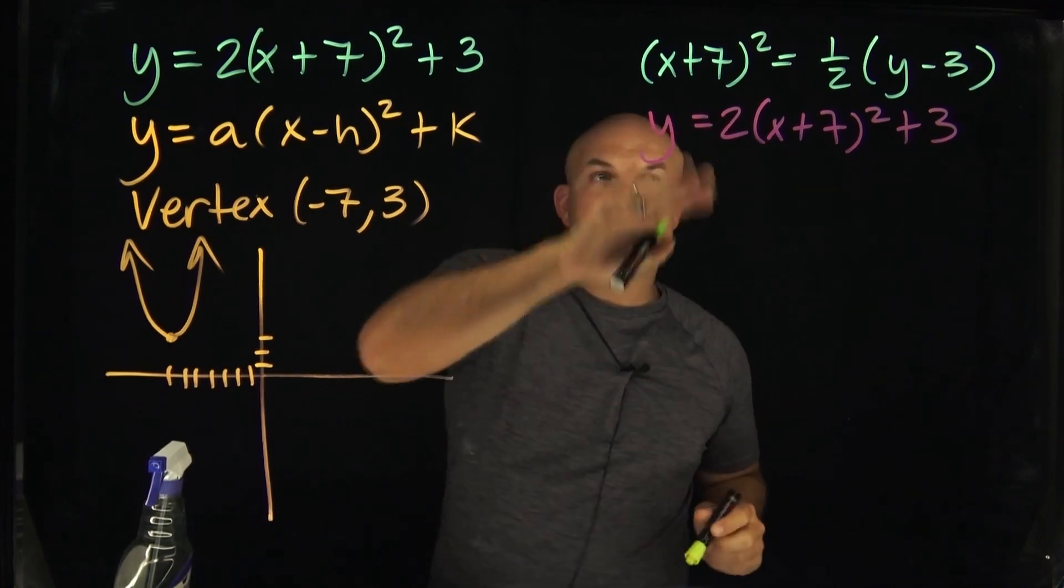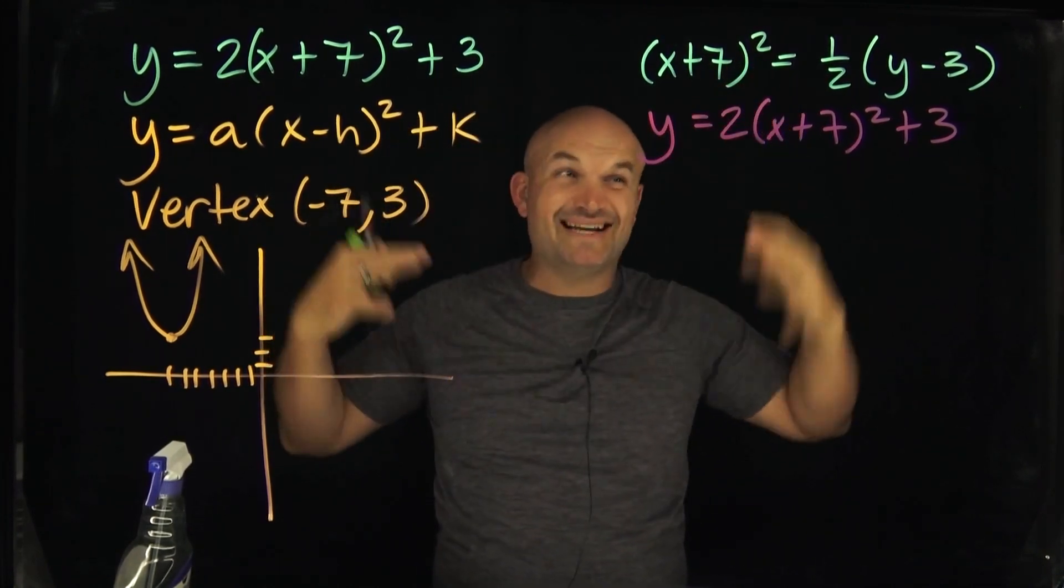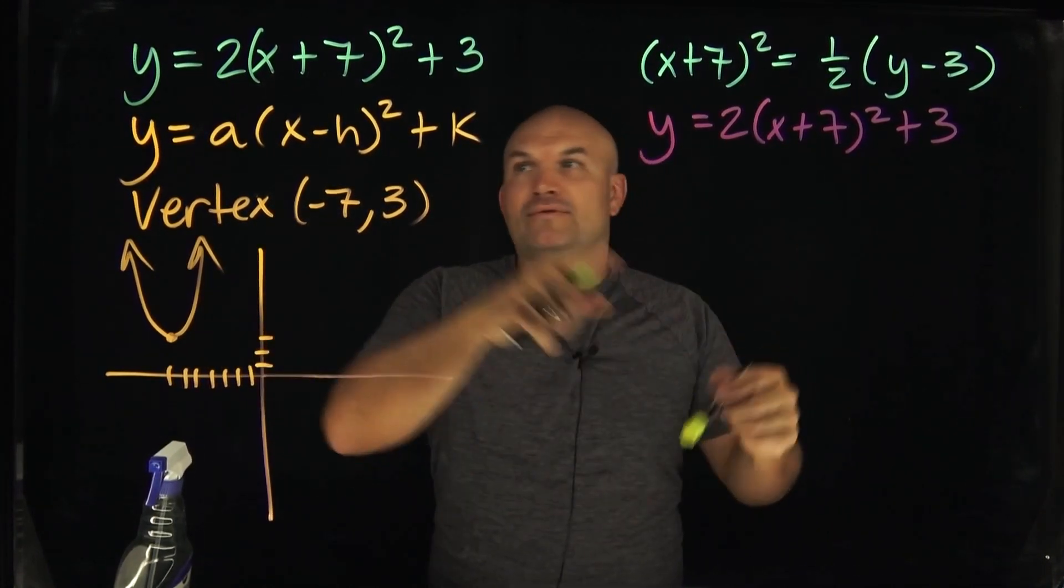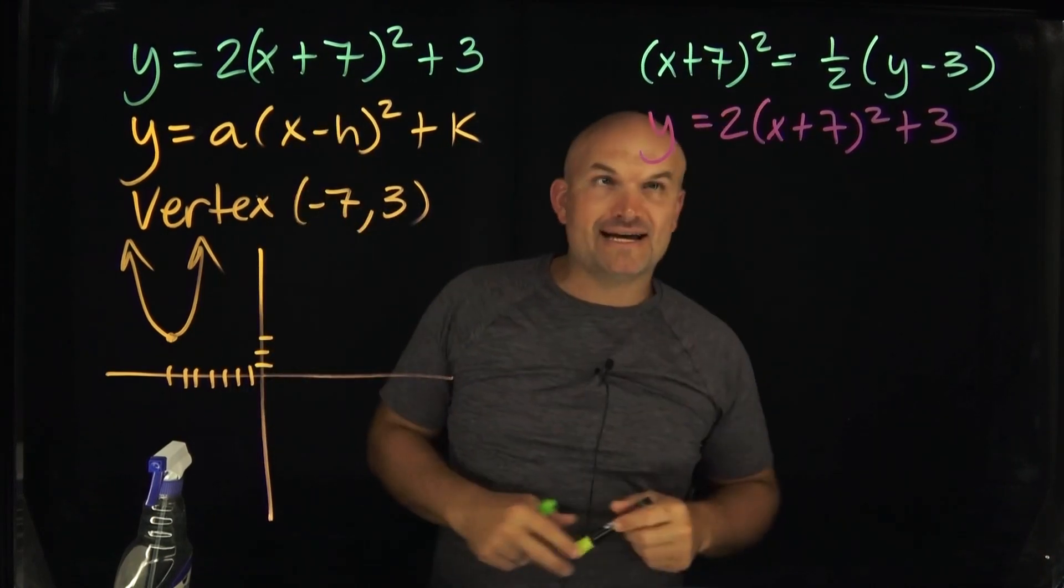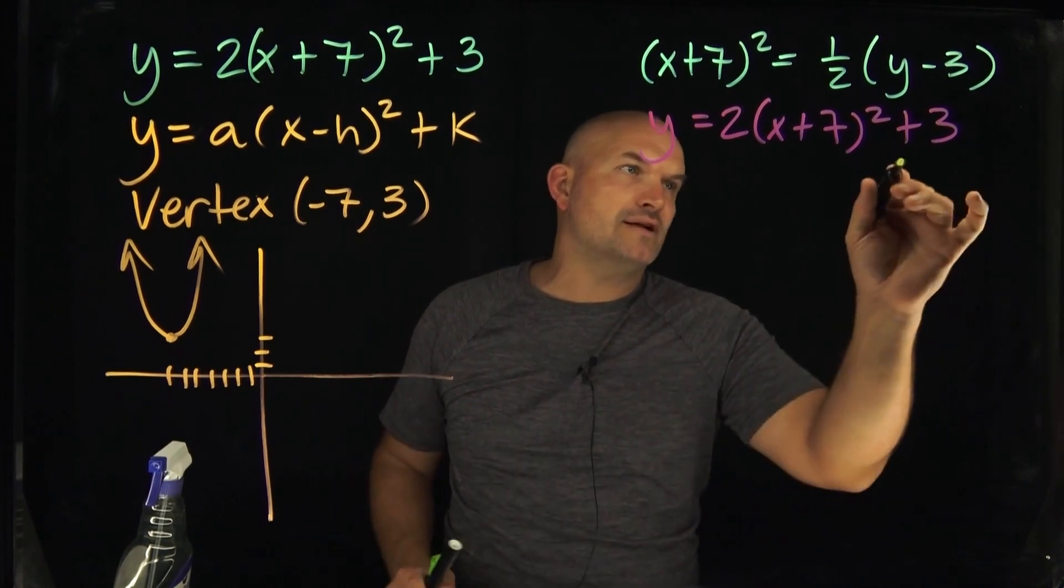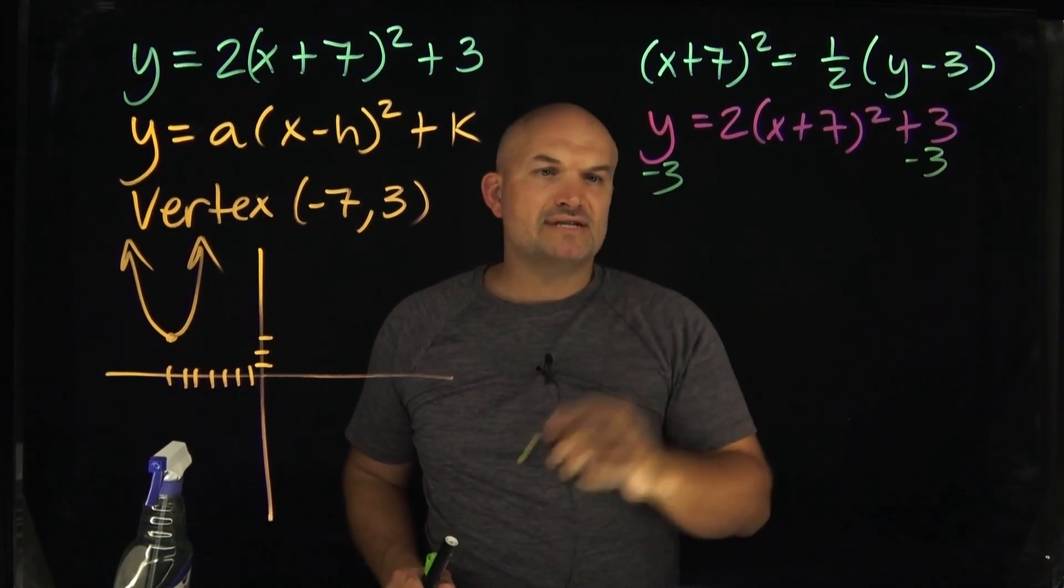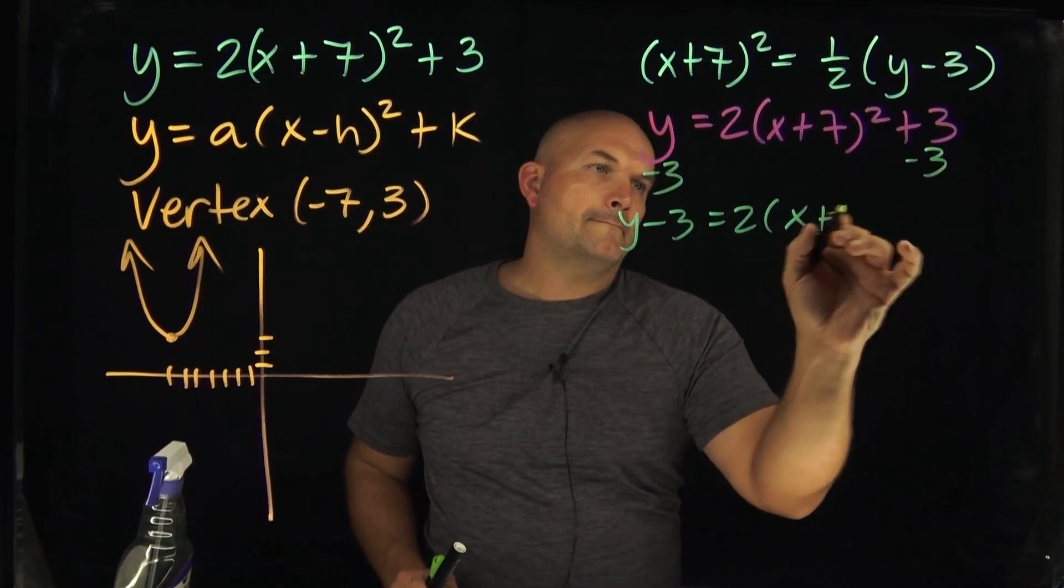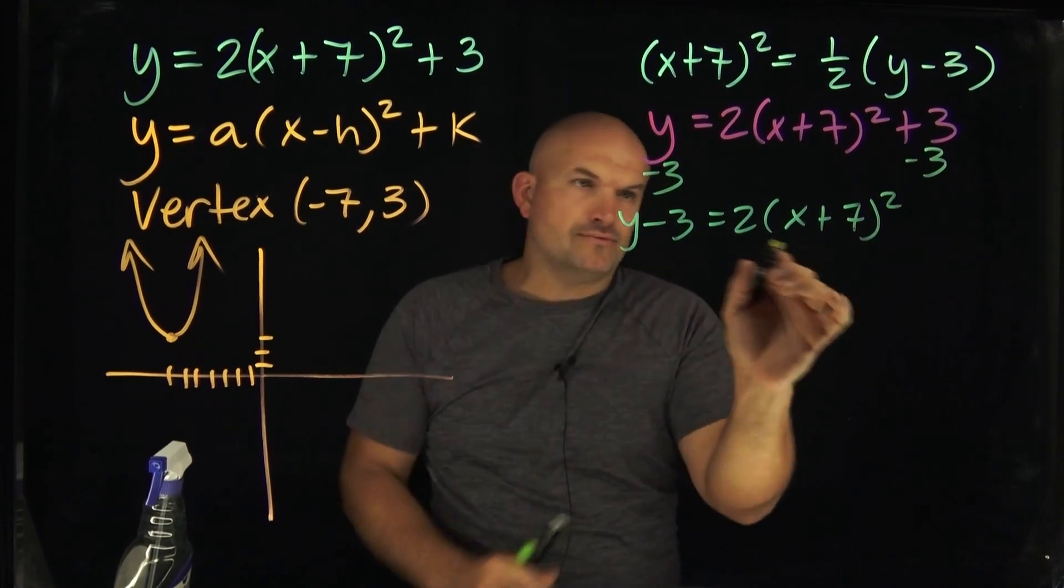Now, the first thing I want you to recognize here in this vertex form is the x plus 7 quantity squared is isolated. It's all by itself. Even though this one's on the right-hand side, this one's on the left-hand side, all we're going to do is isolate this. To isolate this, what are we going to have to do? We're going to subtract 3 on both sides. And then we're going to undo the 2, so we're going to divide by 2.